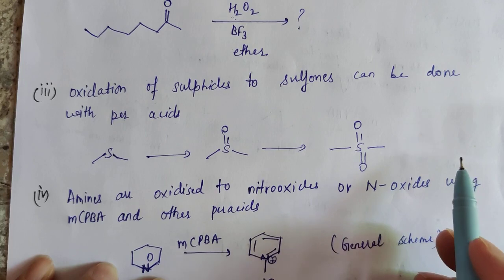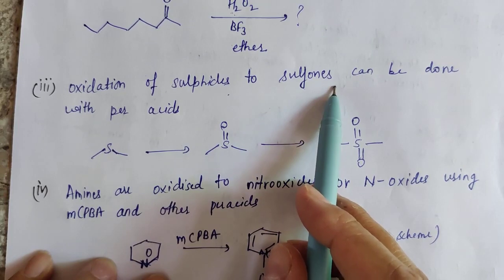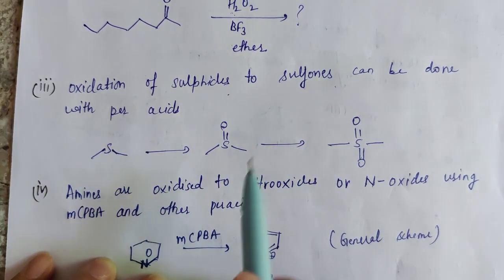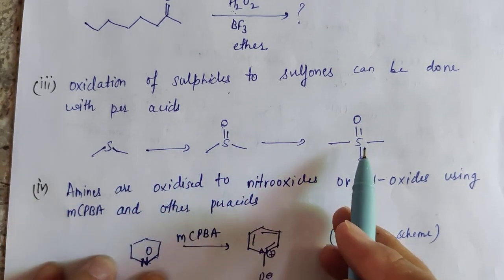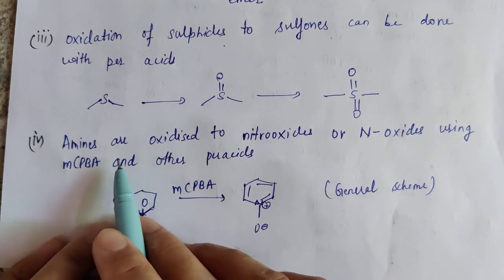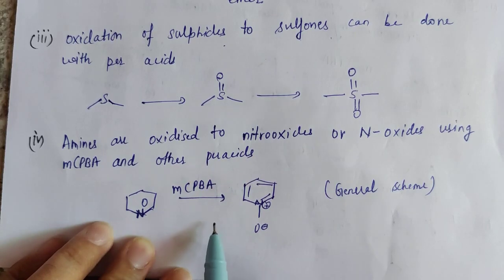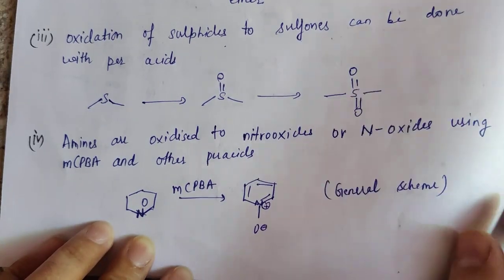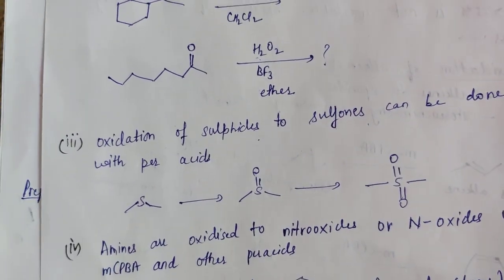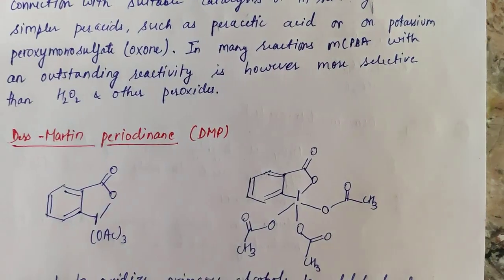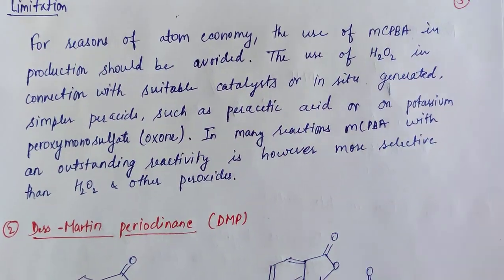Third, MCPBA can oxidize sulfides to sulfones. Not only MCPBA — other peroxides can also do this conversion of sulfur compounds into sulfones. If we talk about amines, nitroxides are formed. This is a general reaction; MCPBA and other peroxides can carry out this reaction.